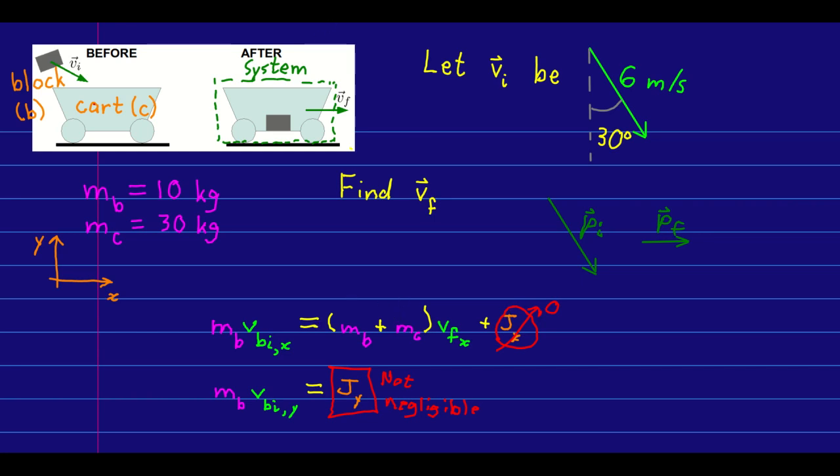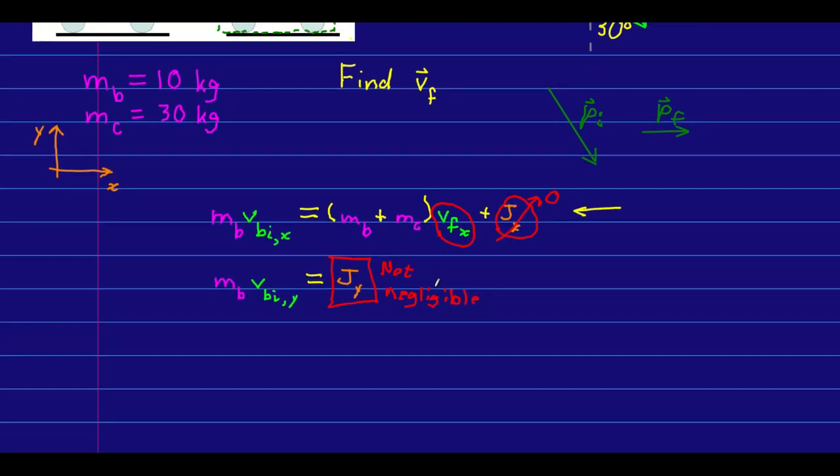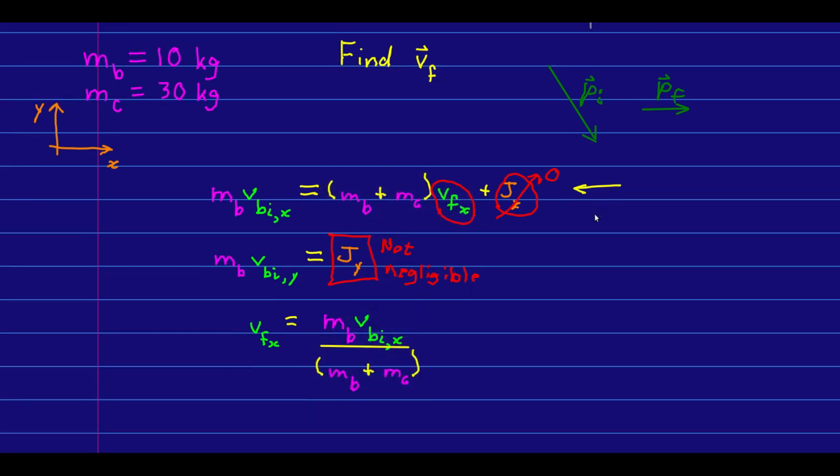And so that tells us that we can solve the x component of the momentum conservation equation and use it to get the unknown that we want, which is the x component of the final velocity. The y component isn't of much interest to us. We could use this to get the y component of the impulse, but we're not looking for that, and we don't really know much about how to think about it yet anyway. And so I will just solve for what we're looking for.